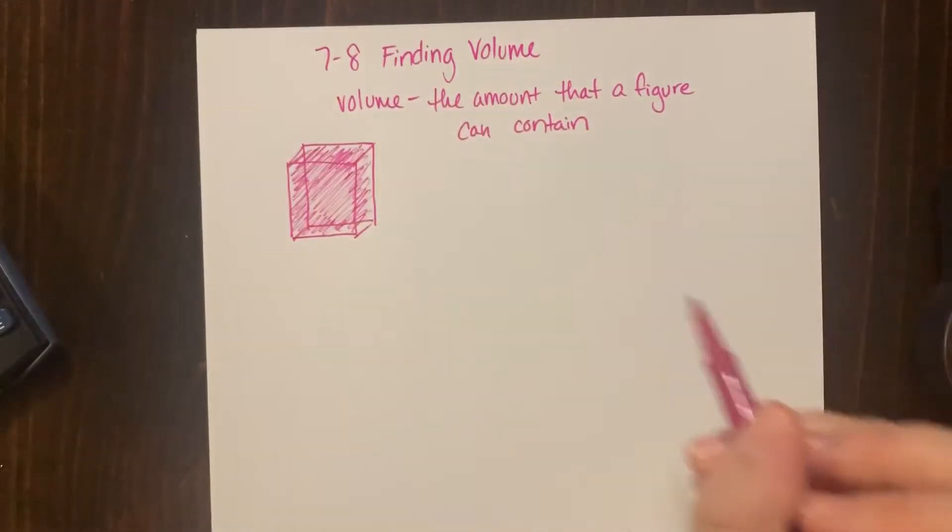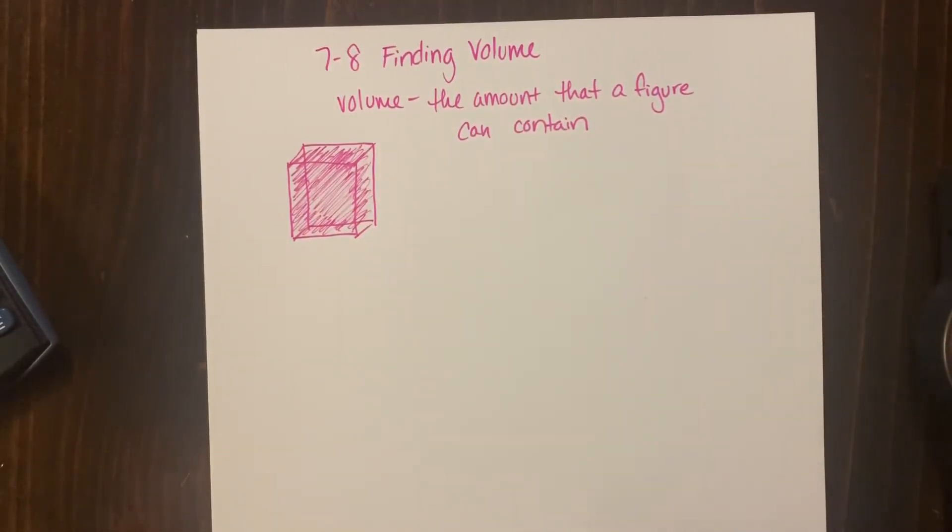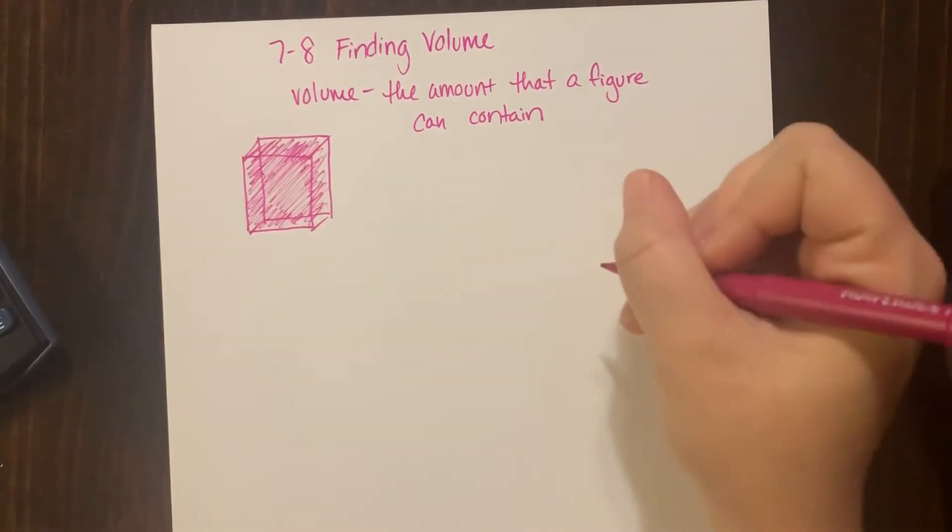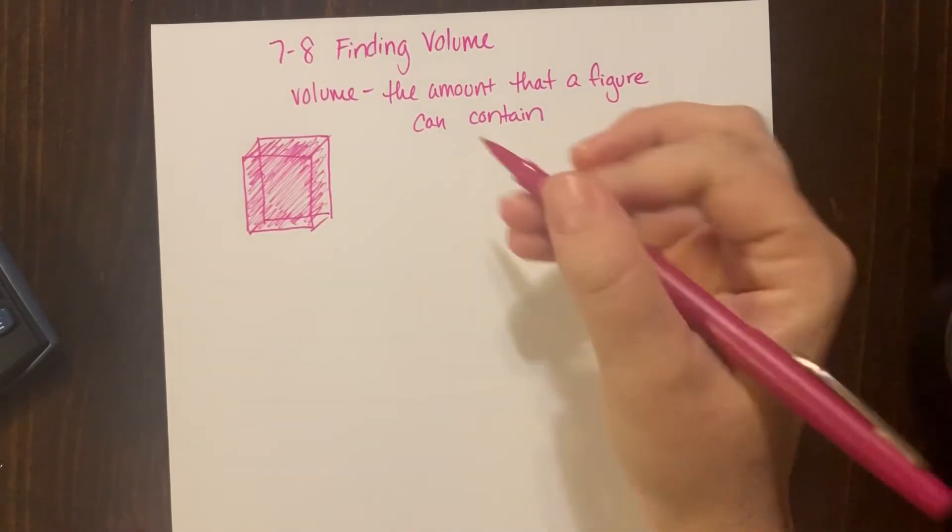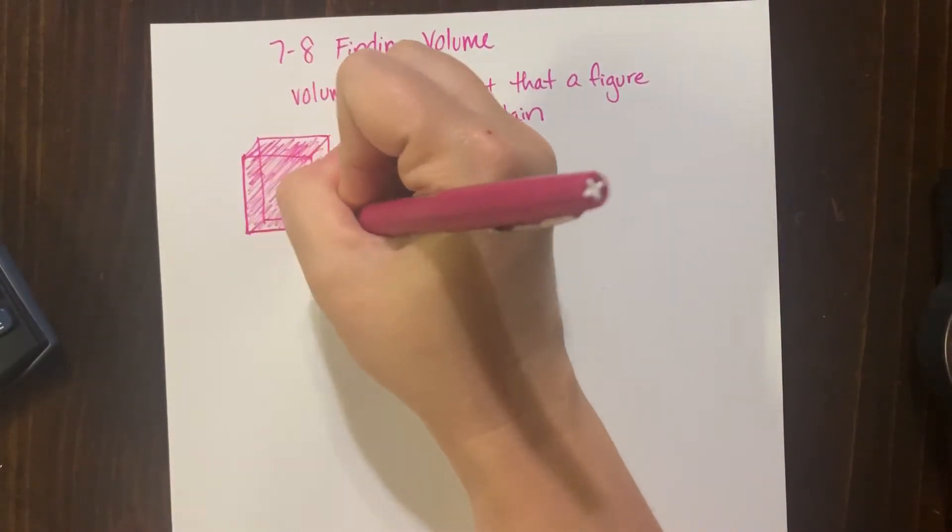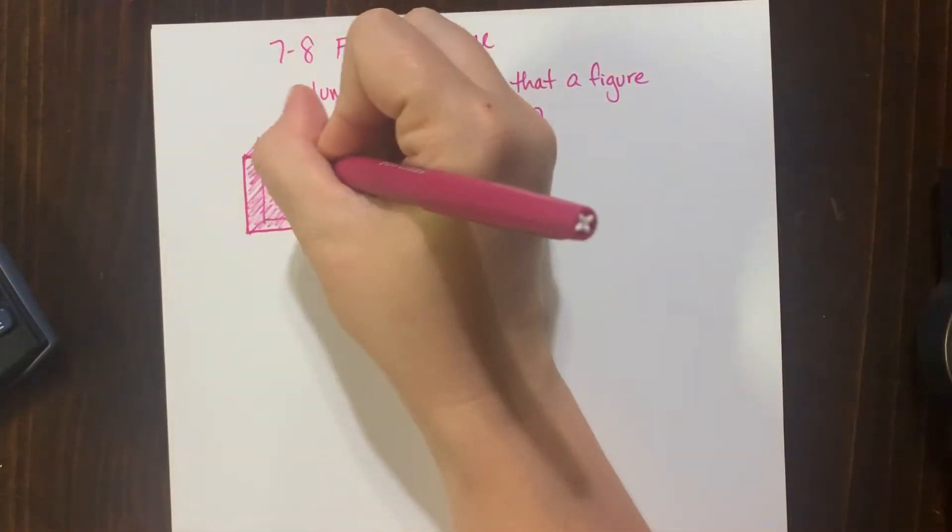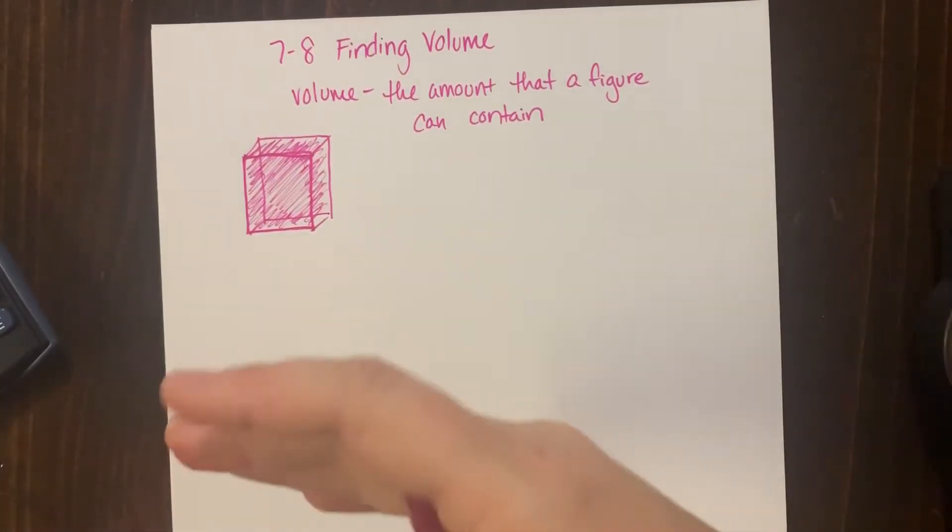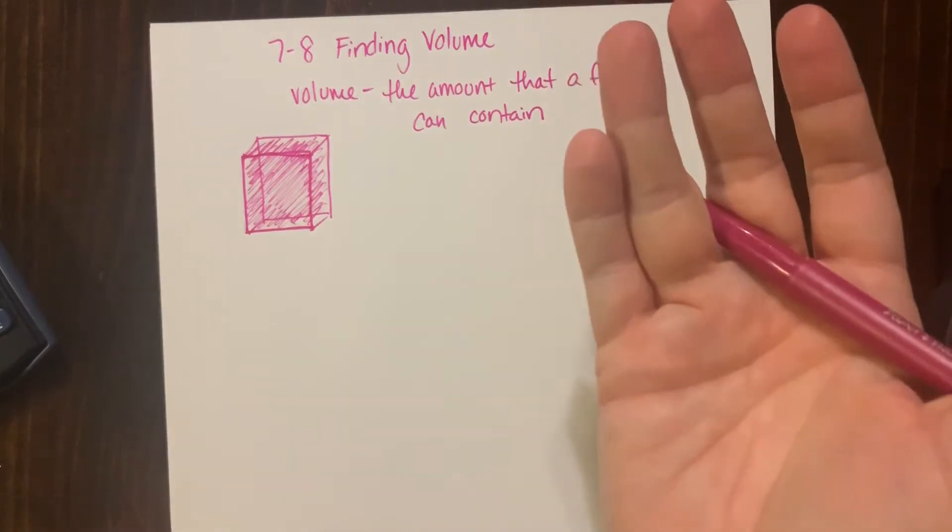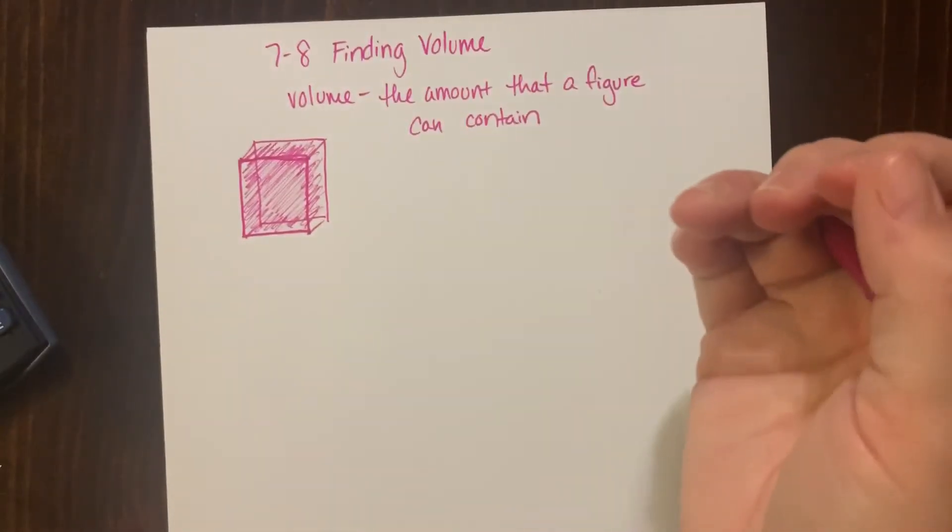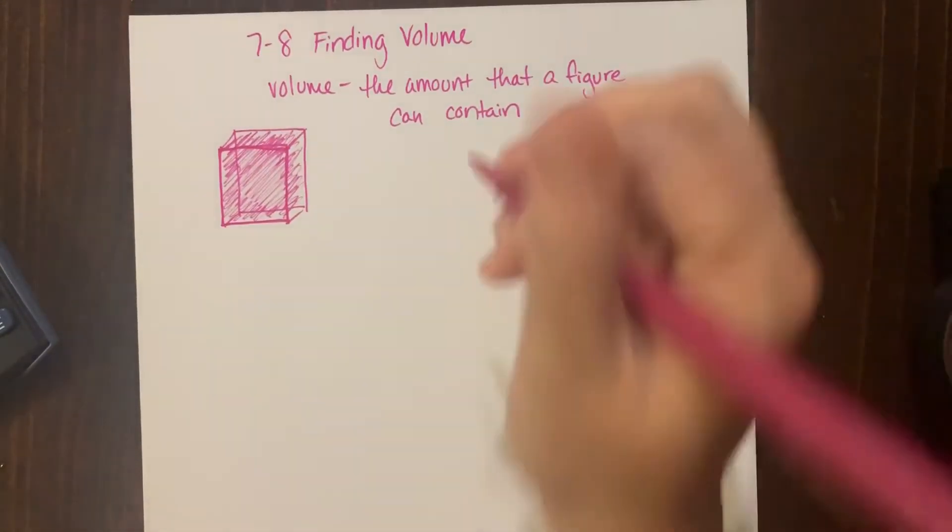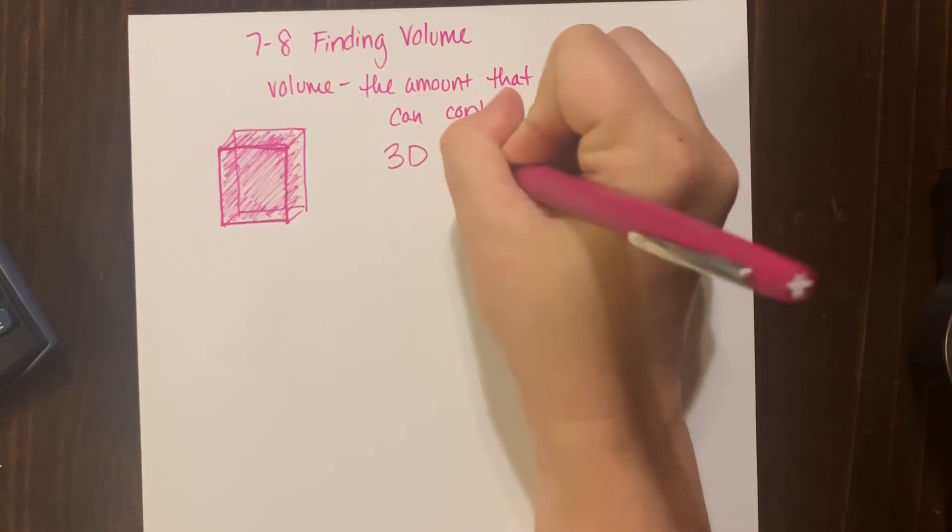So we're not concerned with the faces like we were with area. We're more concerned with what all can fit inside of this box. That's what volume is: the inside of the shape. When we do volume, we're going one step further than we did with area, whereas area we were only concerned about this front two-dimensional face. Remember when we were finding surface area, we even made the rectangular prism into a flat shape.